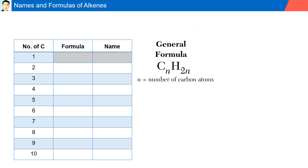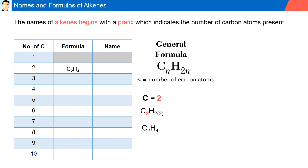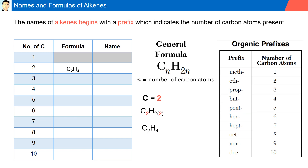Names and formulas of alkenes. Alkenes have the general formula CnH(2n), where n is the number of carbon atoms. Since there must be a double bond between two carbon atoms in alkenes, we cannot have an alkene with just one carbon. Therefore, the first alkene has two carbons. Using the formula CnH(2n), we solve and get C2H4. The names of alkenes begin with a prefix identifying the number of carbon atoms, similar to alkanes. However, the names of alkenes end in -ene. Therefore, our formula C2H4 is called ethene — eth indicating two carbons, and -ene indicating it's an alkene.